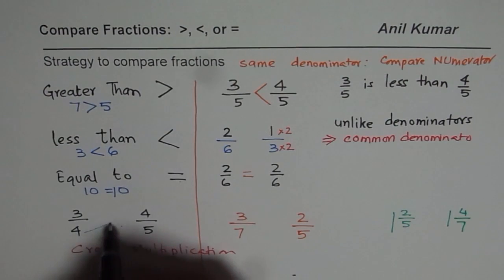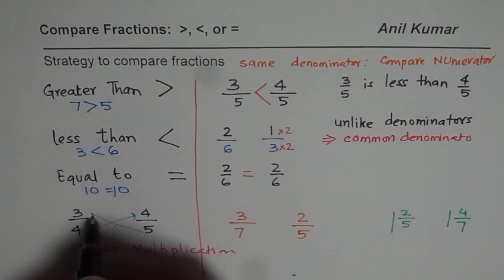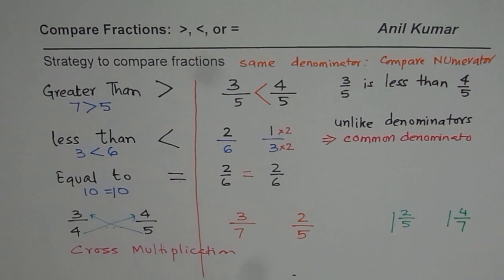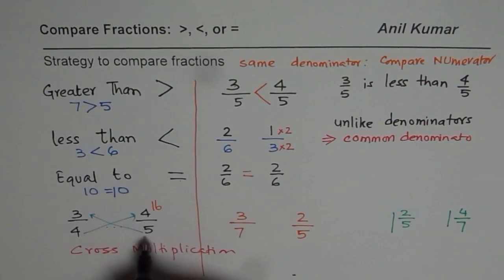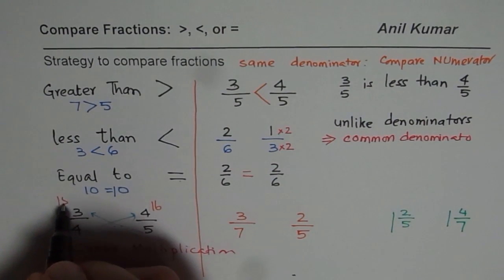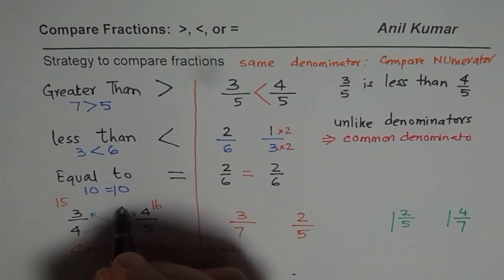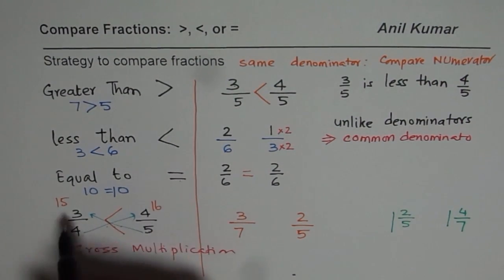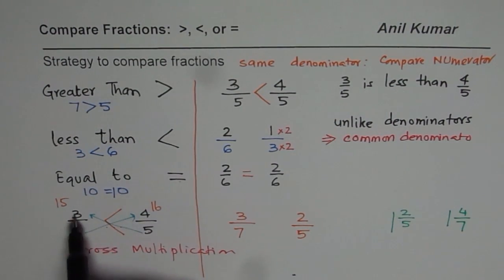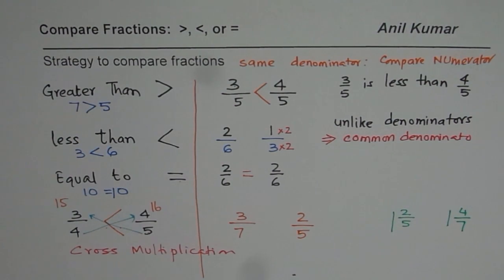I will multiply 4 across with 4 and 5 with 3. So 4 times 4 gives me 16, and 5 times 3 is 15. Which is greater? 16 is greater. Therefore, 15 is less than 16, so 3 over 4 is less than 4 over 5. Cross multiplication is a very fast way of comparing fractions.